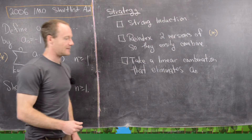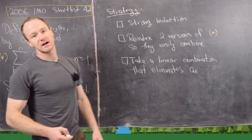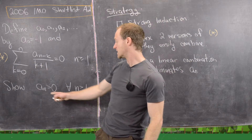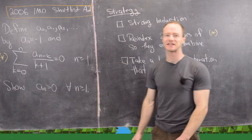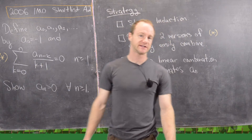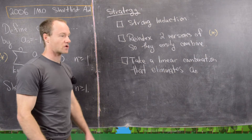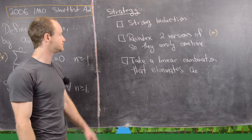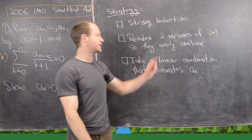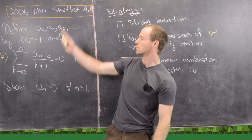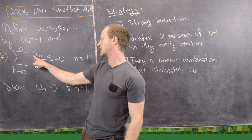Here's our strategy — maybe pause the video and give this a go. Clearly, induction is going to be a good choice because we're trying to prove something is true for all values of a sequence. Generally when proving something indexed by natural numbers, induction is a good choice. Strong induction is actually the right choice here. The next thing we'll want to do is re-index two versions of this defining relation so that they easily combine.